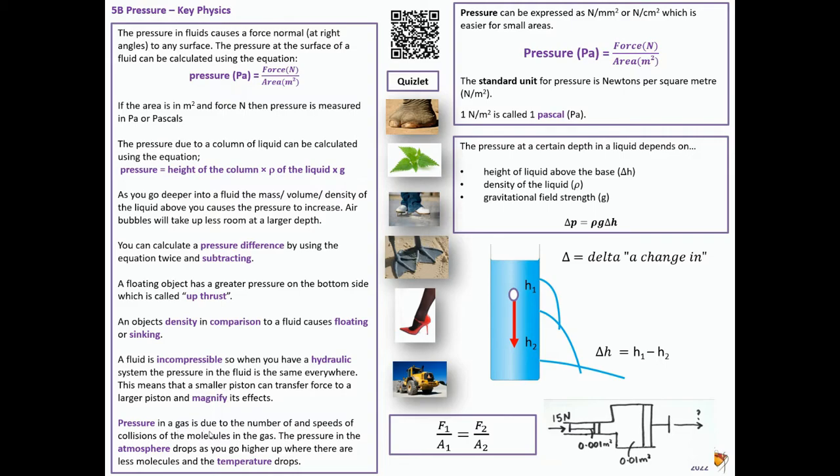Pressure in a gas is due to the number and speeds of collisions of the molecules in a gas. The pressure in the atmosphere drops as you go higher, where there are less molecules and the temperature drops, so they're not going as fast. You need to think about situations where there are high and low pressure. We have low pressure for an elephant, high pressure for a needle in a nettle. Skates melt the ice underneath, they're high pressure. Feet of a swan, low pressure. High heels, high pressure. Big wheels, low pressure. That's the topic we call Pressure 5B.